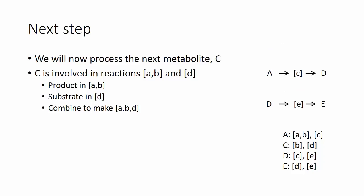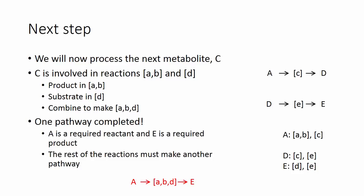So again, we get rid of these reactions, and we end up with A yields E via the A, B, D pathway. And so we essentially have a full pathway here. Our product E is being made from our required substrate A. One pathway completed. A is a required reactant. E is a required product. The rest of the reactions must be another pathway.